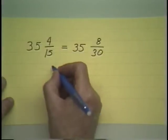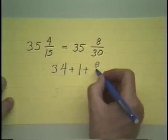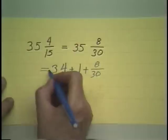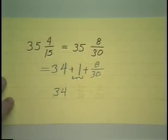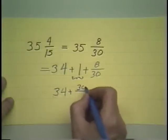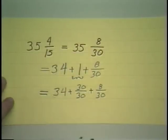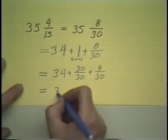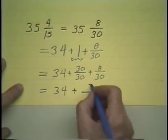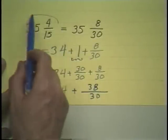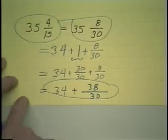I could write that 35 as 34 plus 1 — still 35 — then of course plus 8 thirtieths. Same thing, just written differently. Now I will leave the 34 alone, but I will replace the 1 by something equal to 1, which is 30 over 30. I still have the 8 over 30. Since these two have common denominators, we can add: 30 plus 8 is 38. So 35 and 4 fifteenths, or 35 and 8 thirtieths, may be replaced by 34 and 38 thirtieths.